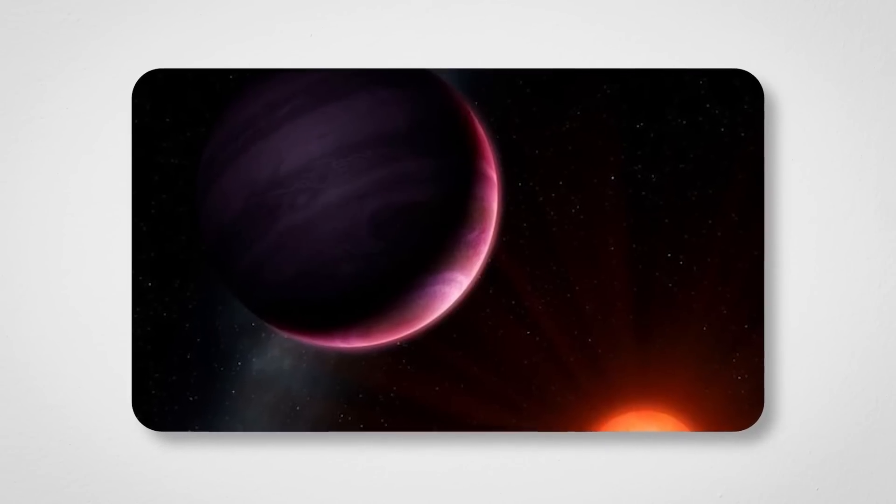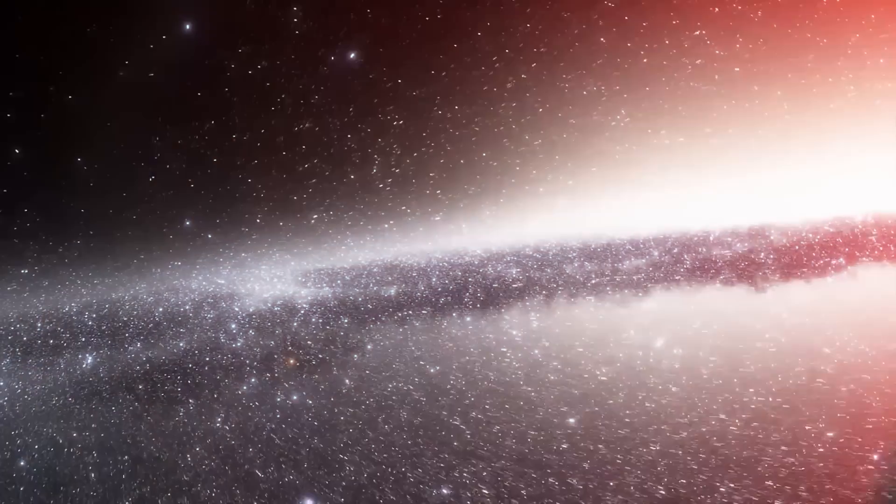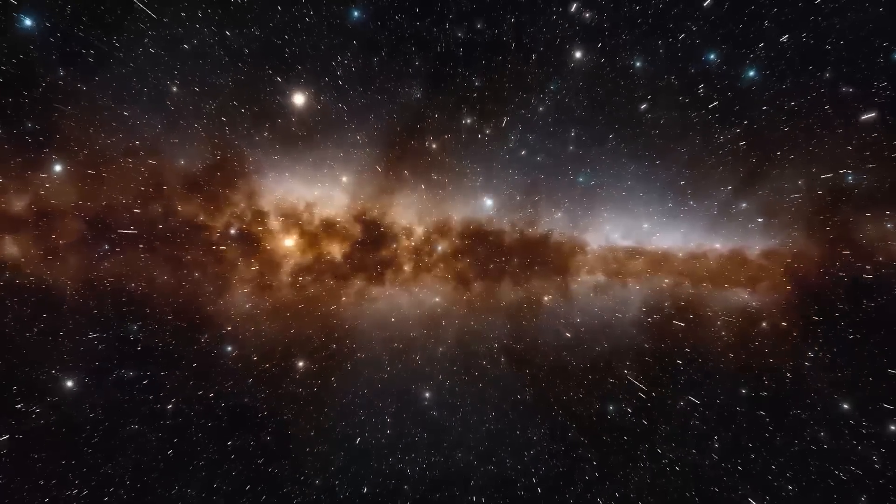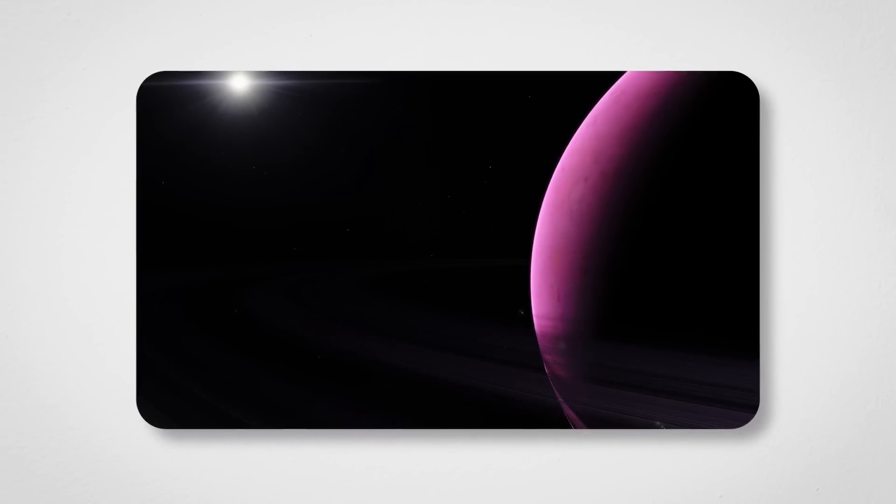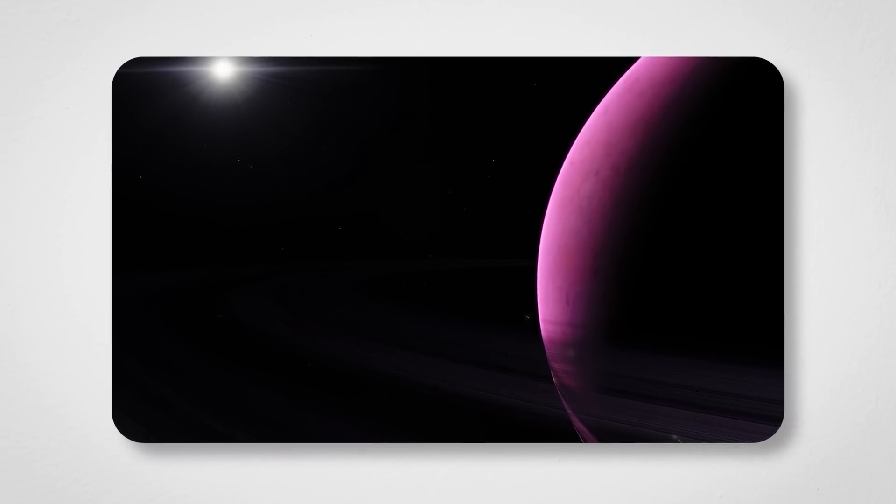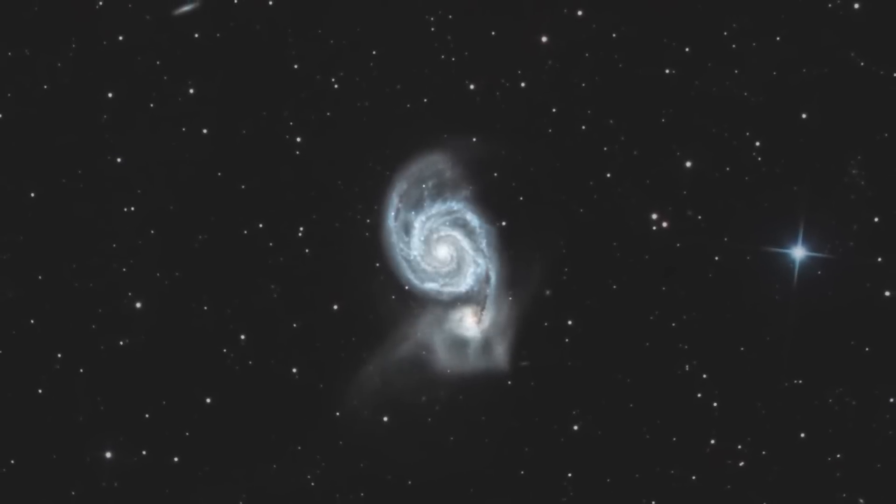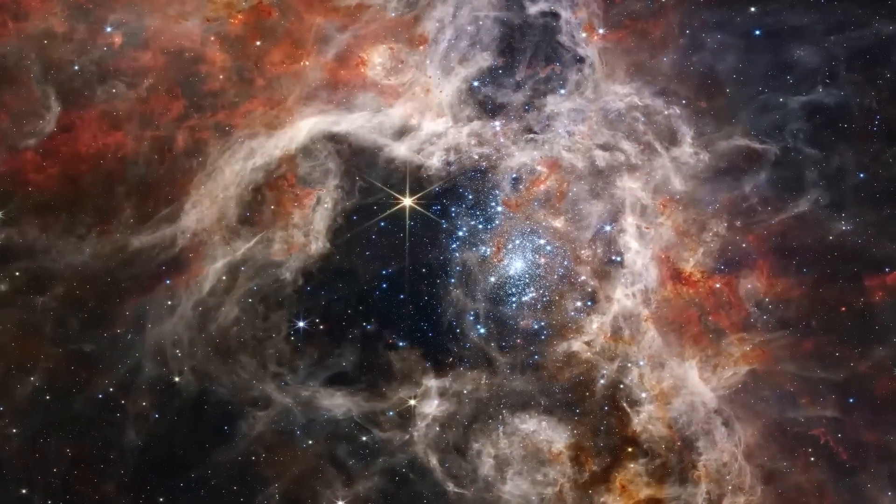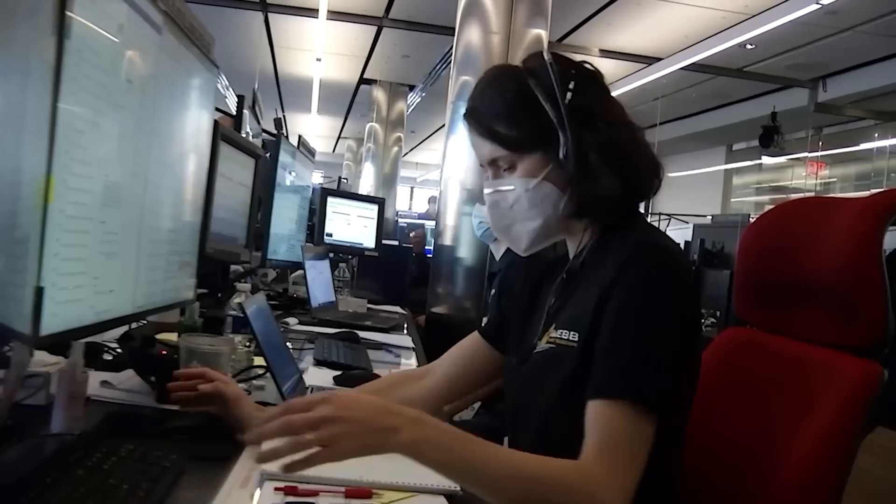One of the coolest things about Gliese 504b is its auroras. These aren't like the pretty northern lights you see on Earth. They're a whole other level, likely powered by its insanely strong magnetic field. Scientists think a moon or even another nearby planet could be helping to stir things up, creating these jaw-dropping displays of light. But here's the kicker: this isn't even the strangest weather in space.